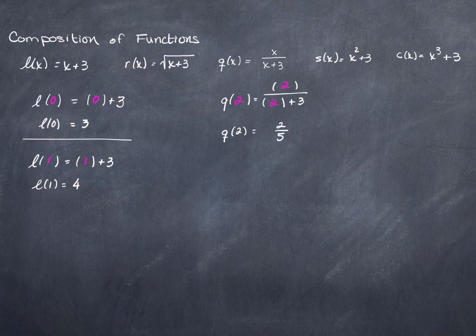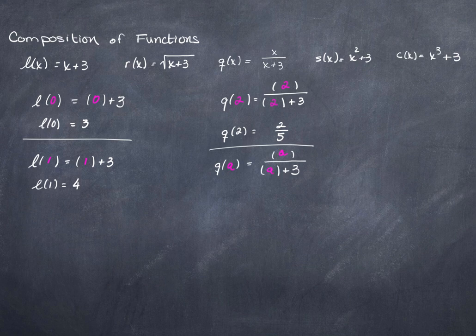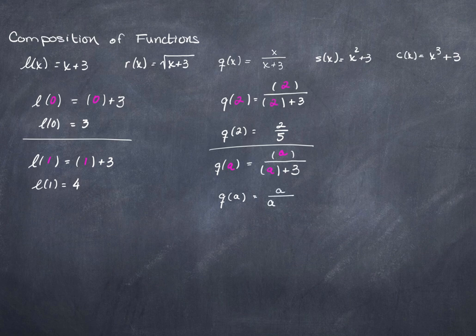But what if we wanted Q of something else? Instead of plugging in a number, I'm going to plug in an unknown number. I can plug in whatever number I'm given, and if the number has an unknown value, I do the same thing. The value of Q at the number A is just A over A plus 3. There's nothing more I can do with this — that's the value of Q of A.